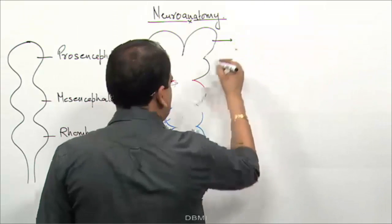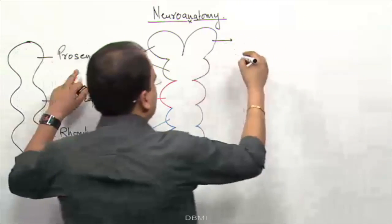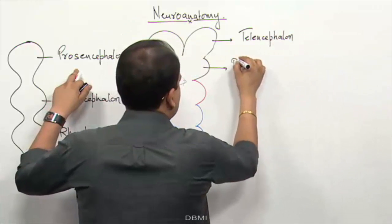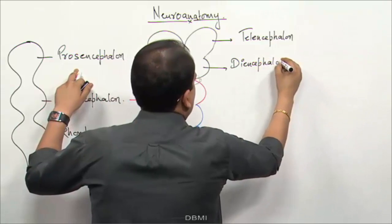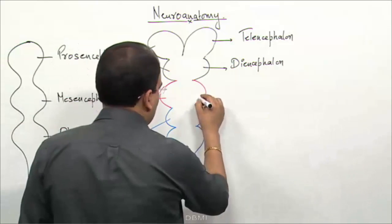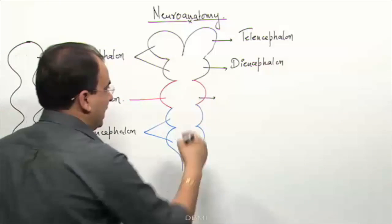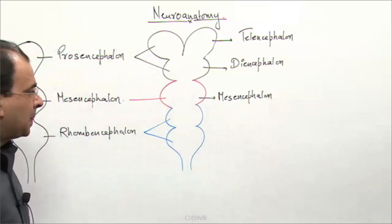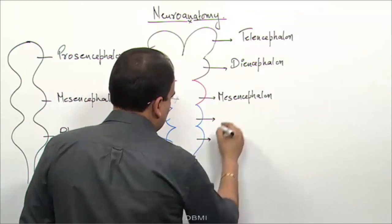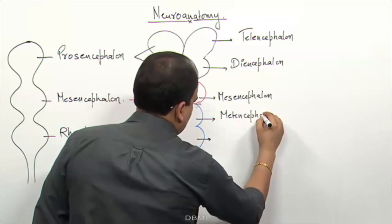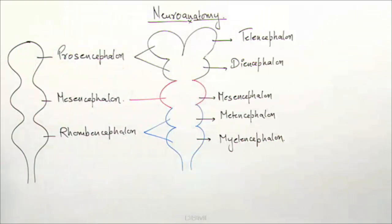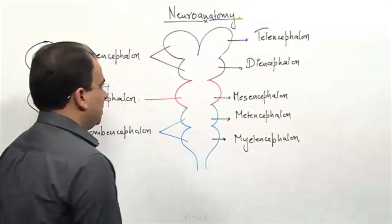This subdivision of the prosencephalon gives the telencephalon and the diencephalon. There are no further subdivisions of the mesencephalon — it will stay as mesencephalon only. The rhombencephalon is dividing into the metencephalon and myelencephalon. So these are the further subdivisions of the primary brain vesicles.